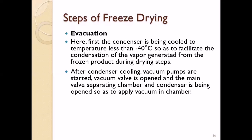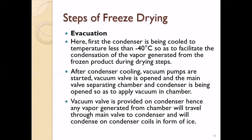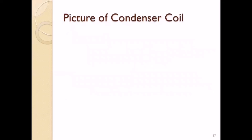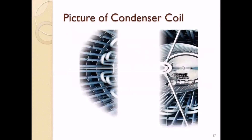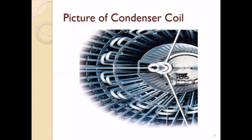Any vapor generated from the chamber travels through the main valve to the condenser and condenses onto the condenser coils in the form of ice. The condenser coil is a pipe structure through which refrigerant gas is passed to achieve temperatures below minus 40 degrees, allowing water vapor to directly condense onto the coils.